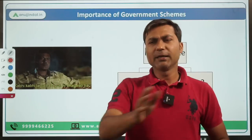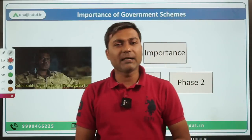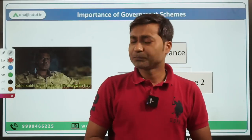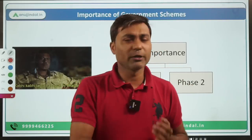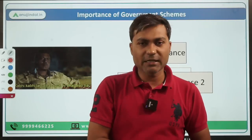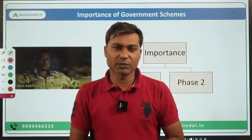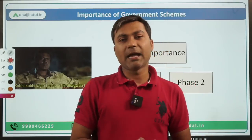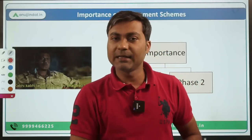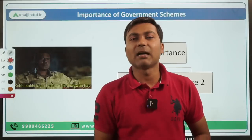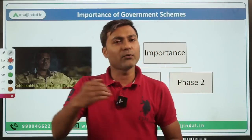A few days back I was talking to a student who shared his experience. He said that last year he was perfect in every subject — GA was good, quant was good, reasoning was good, English was good. He cleared Phase 1, but when it came to Phase 2 he wasn't able to clear it. He got very low marks in ESI, and the reason was that his government schemes were not prepared. This is a topic which can cost your entire examination.